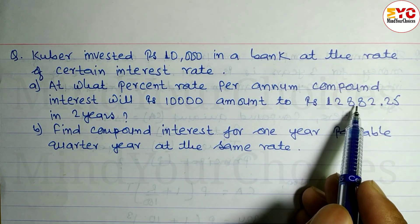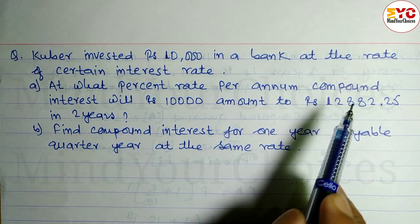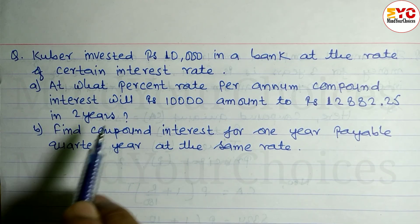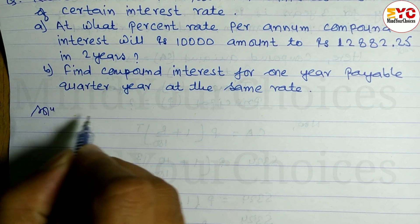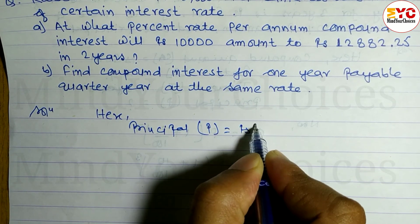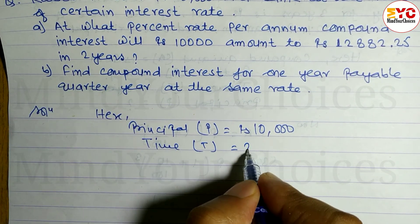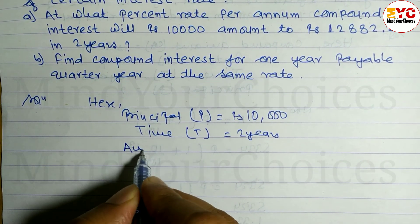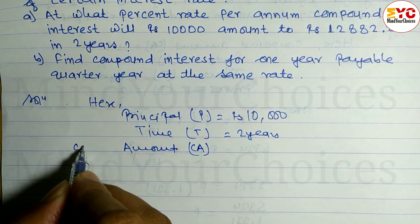The compound amount is twelve thousand eight hundred eighty-two point two five in two years. We have to find the rate of interest. Principal P is equal to rupees ten thousand. Time t is equal to two years. Compound amount CA is equal to rupees twelve thousand eight hundred eighty-two point two five.